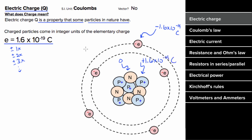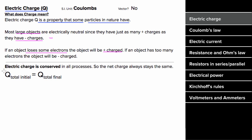Most atoms in the universe are electrically neutral overall, since they'll have just as many negative electrons as they do positive protons. But if an atom had too many electrons, overall that atom would be negatively charged. And if an atom had too few electrons, that atom would be overall positively charged. Something really important to remember is that electric charge is always conserved — the total charge initially is going to equal the total charge finally after any process.